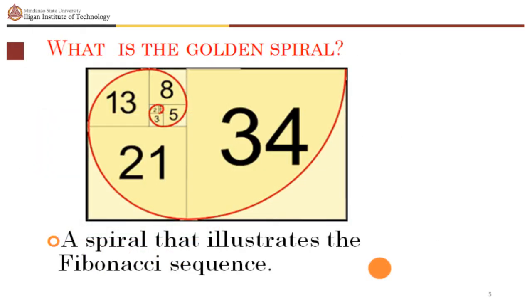The golden spiral illustrates the Fibonacci sequence. The series of squares where the spiral unfurls follow the sequence 1, 1, 2, 3, 5, 8, 13, 21, 34, and so on.